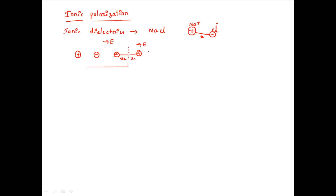We are going to find out the ionic polarizability. Because of the application of the electric field, dipoles are created in the ionic crystal. Hence, their dipole moment is directly proportional to the electric field. To remove the proportionality, we introduce a constant alpha, which is nothing but polarizability. This alpha_i is called ionic polarizability.